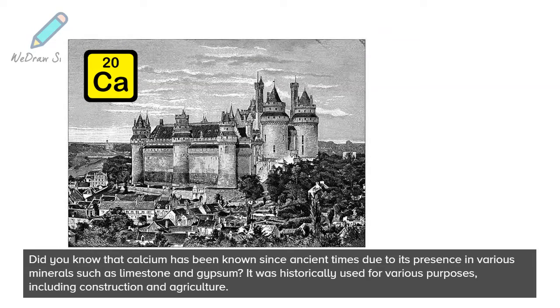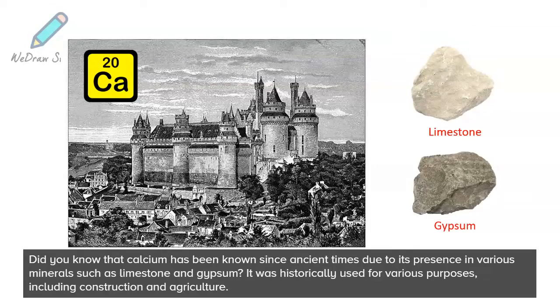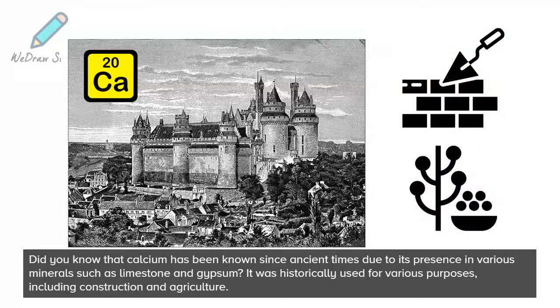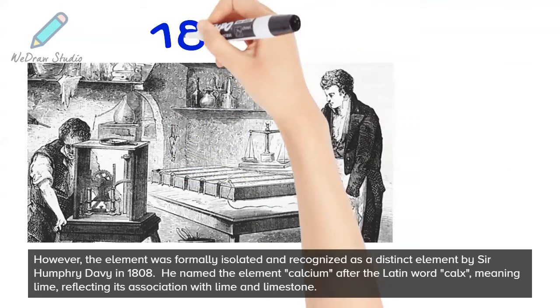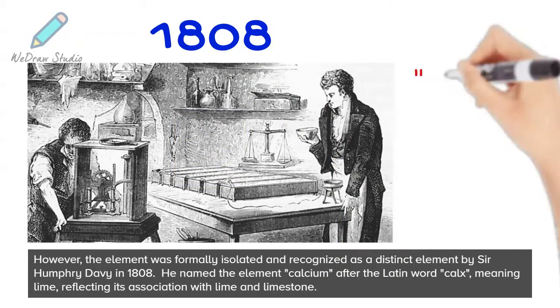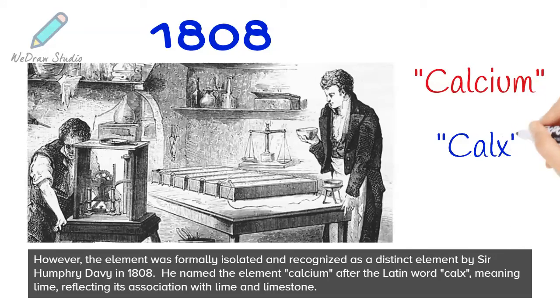Did you know that calcium has been known since ancient times, due to its presence in various minerals such as limestone and gypsum? It was historically used for various purposes, including construction and agriculture. However, the element was formally isolated and recognized as a distinct element by Sir Humphrey Davy in 1808. He named the element calcium after the Latin word calx, meaning lime, reflecting its association with lime and limestone.